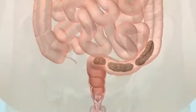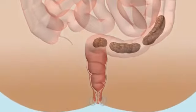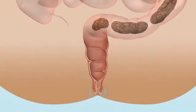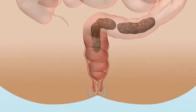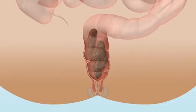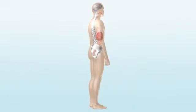The average transit time for females is 2.4 days and 1.9 days for males. When stool fills your rectum, nerve endings register that your bowel wall becomes distended and a signal is sent to your brain telling you that it's time to find a toilet.